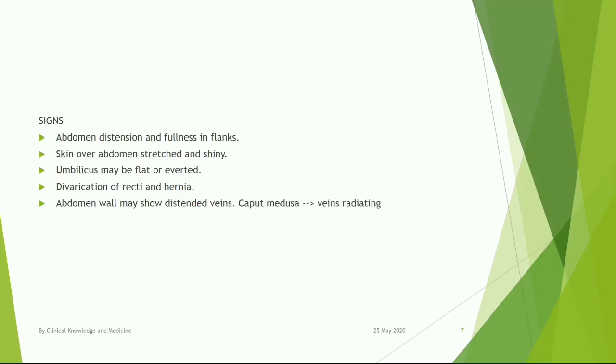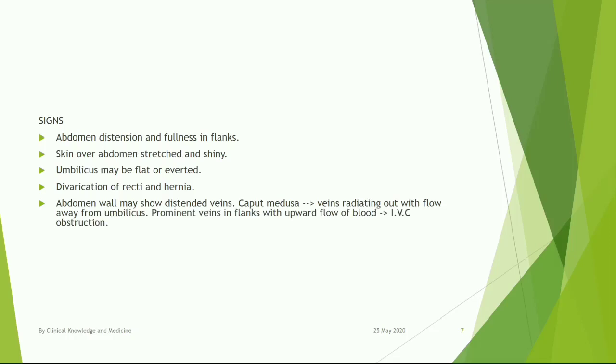Caput medusae: veins radiating out with flow away from the umbilicus. Prominent veins in the flanks with upward flow of blood indicate inferior vena cava obstruction.